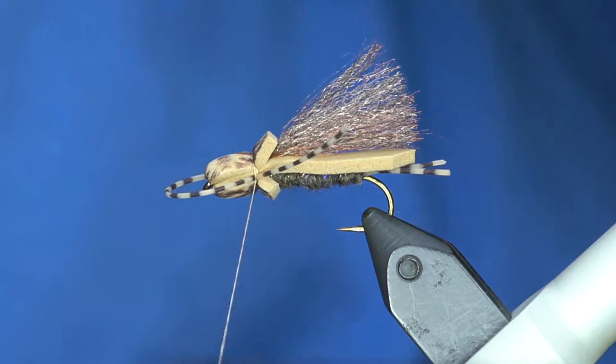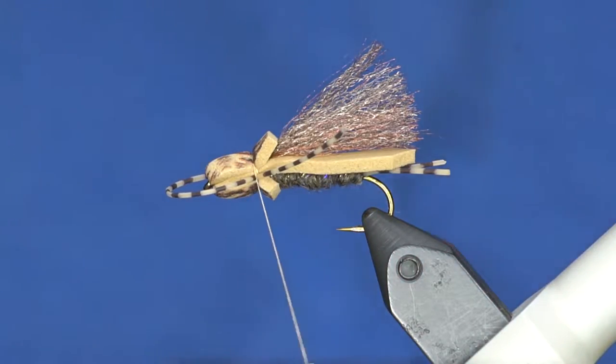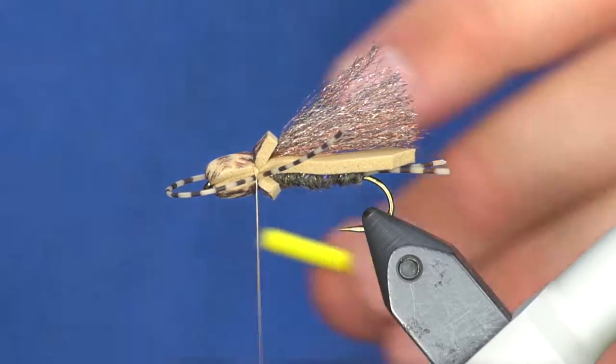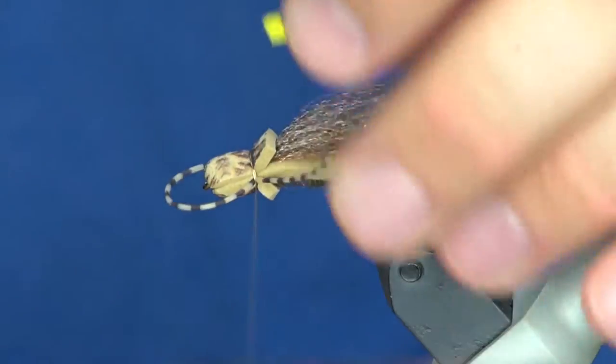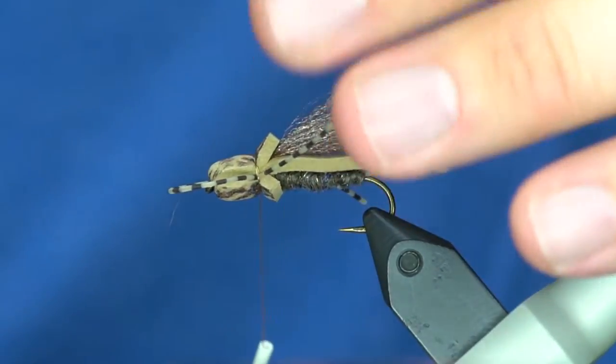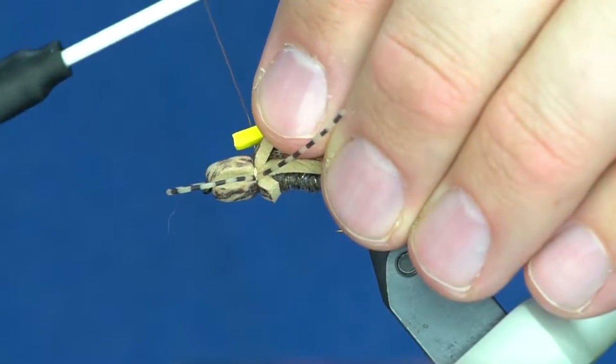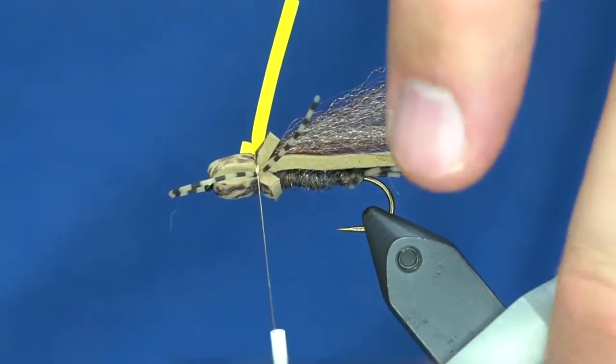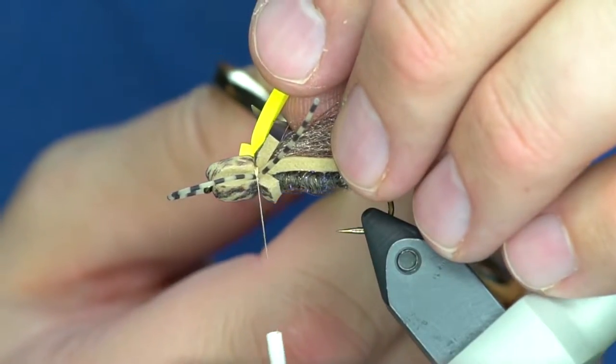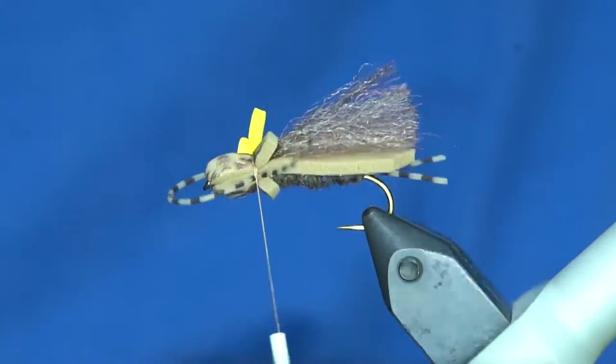Tie it in there. Now because this fly sits relatively low, I will tie in a little indicator. I've just got a piece of two millimeter craft foam, I mean fly tuning foam.